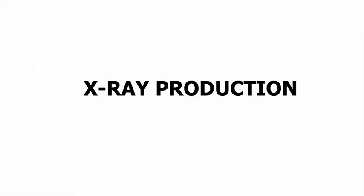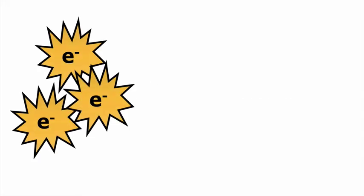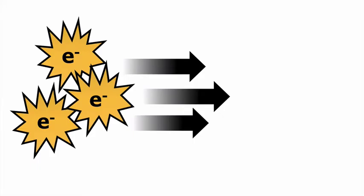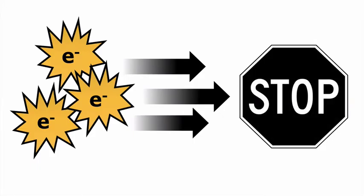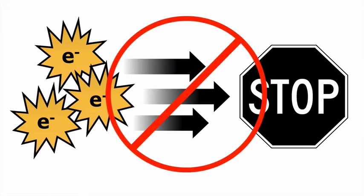X-rays are real, and they have to be created in a very specific way. There's really three requirements of x-ray production: a source of electrons, a means of rapidly accelerating or energizing those electrons, and finally, a means of rapidly decelerating or de-energizing those electrons. If any of these requirements are missing, x-rays will not be produced.